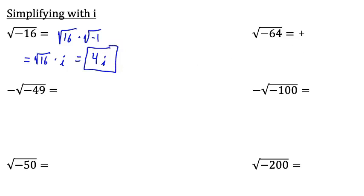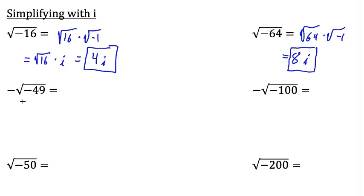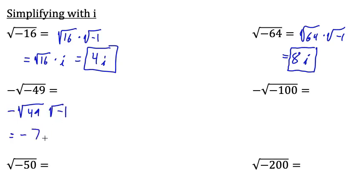How about the square root of negative 64? That's the square root of 64 times the square root of negative 1, which equals 8i, because the square root of 64 equals 8 and the square root of negative 1 equals i. Now let's throw in an extra negative sign and keep track of things. We have negative times the square root of negative 49 — we want the opposite of the square root of negative 49. This equals negative times the square root of 49 times the square root of negative 1, which equals negative 7i. So that negative sign just tagged along.